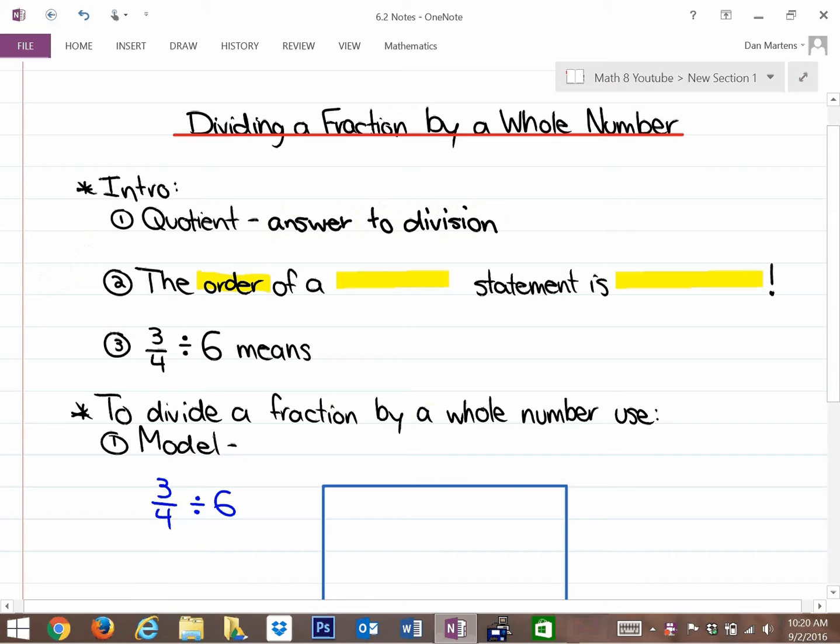So if you're asked the quotient of 8 and 2, the answer is 4 because 8 divided by 2 is 4. The quotient of 18 and 3 is 6, for example.